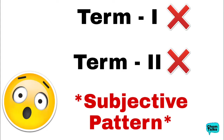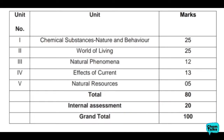Now let's talk about the division of chapters and their weightage across chemistry, biology, and physics, and which chapters are completely deleted. Our entire class 10 science syllabus has been divided into 5 themes. The first is Chemical Substances — Nature and Behavior, which is the chemistry portion, 25 marks. The second unit is World of Living, the biology portion, 25 marks. The third is Natural Phenomena and fourth is Effect of Current — 12 marks and 13 marks respectively, totalling 25 marks for physics. The fifth unit is Natural Resources, which carries 5 marks. This makes a total of 80 marks, and 20 marks will be for internal assessment.